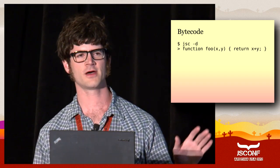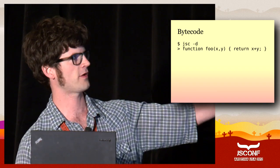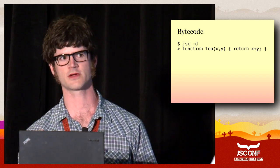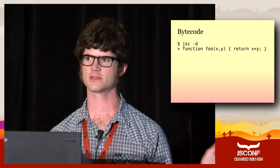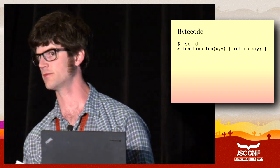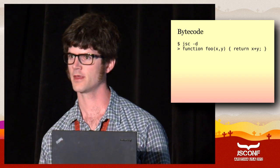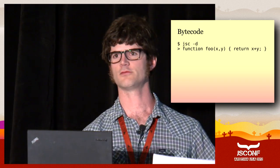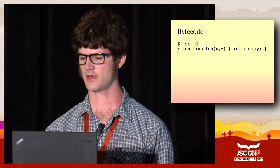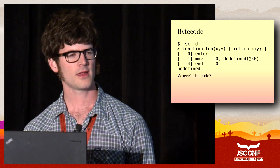If you have JavaScript Core — for example, you've downloaded a WebKit nightly and found the JSC binary tucked in there for the Mac platform, or you've built JavaScript Core yourself — you'll end up with this binary called JSC, which is the interpreter. When you run it with a -g argument, it's going to dump any time it creates bytecode. So if we have this little function here, function foo, and you put it in and press enter, it's going to print out some bytecode.